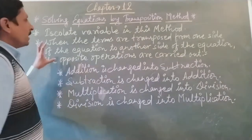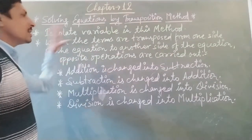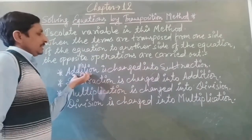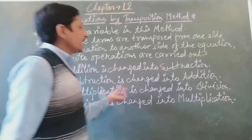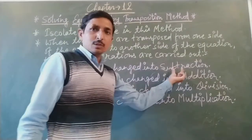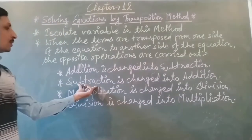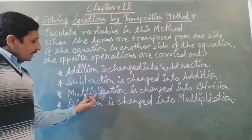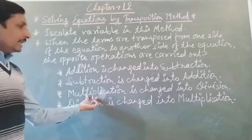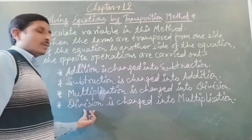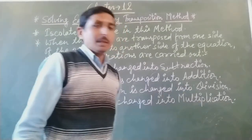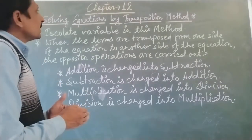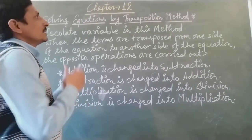So the process is: when we transpose the terms from one side of the equation to another side of the equation, the opposite operations are carried out. That means if addition is present on one side, it is changed into subtraction on the other side. If subtraction is present, it is changed into addition. If multiplication is present, it is changed into division, and if division is present, it is changed into multiplication. By following this process, we can solve equations by the transposition method.